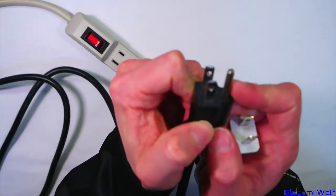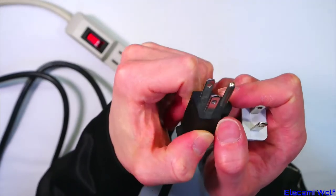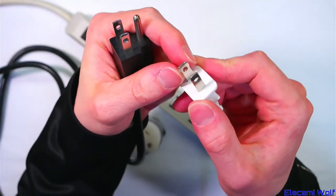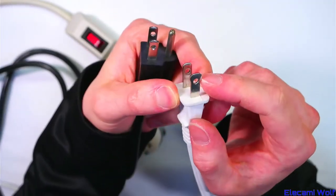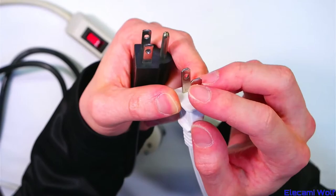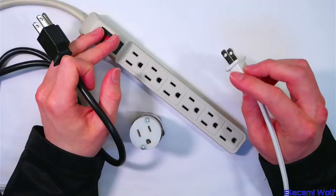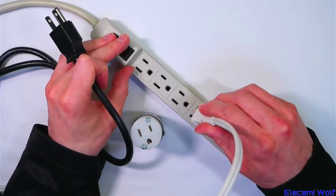These are often grounded and the ungrounded variety are usually polarized by the neutral prong being wider than the face. This makes them only go one way into the socket.